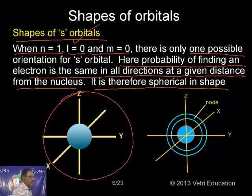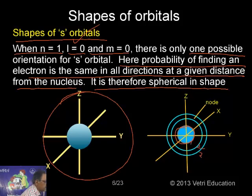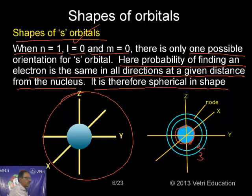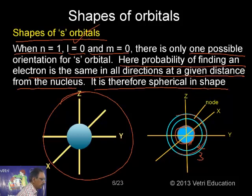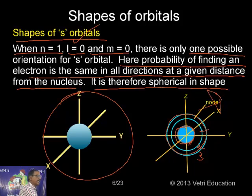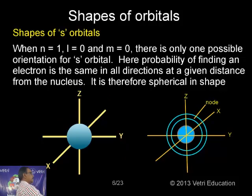There are multiple orbits — first, second, and third. In between these orbits is a space called a node. The node means the probability of finding an electron is zero. In the 2s orbital, there is a spherical shell within the orbital where the probability of finding an electron is zero. This is called a node or nodal surface.